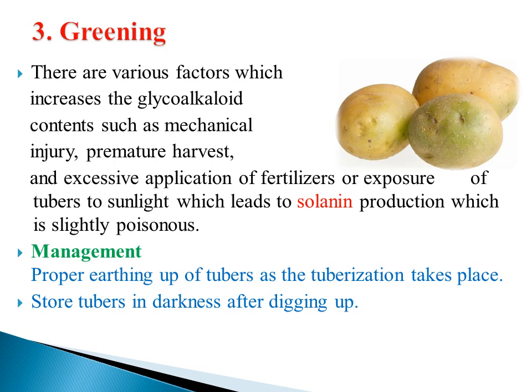Greening disorder is mainly managed by proper earthing up of tubers as tuberization takes place. One earthing up is necessary at the time of tuberization. After harvesting, store tubers in darkness — transfer them to a dark room or shaded condition. Do not keep tubers in light or under sunlight.